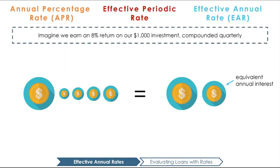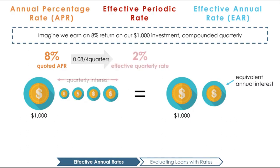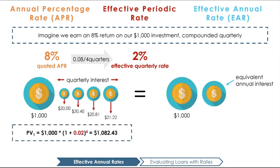For example, let's say we earn an 8% return on our $1,000 investment, compounded quarterly. If our investment is compounded quarterly, then our effective quarterly rate is 2%, or the 8% APR divided by four periods. At the end of the year, our investment would be worth 1,000 times 1 plus 0.02 to the power of 4, or $1,082.43.